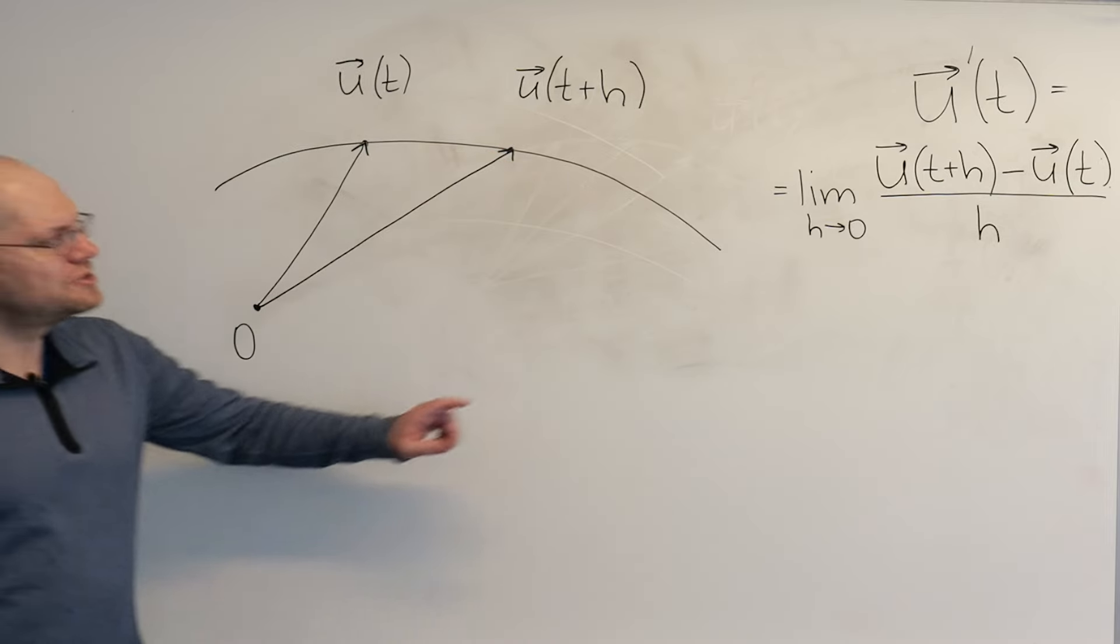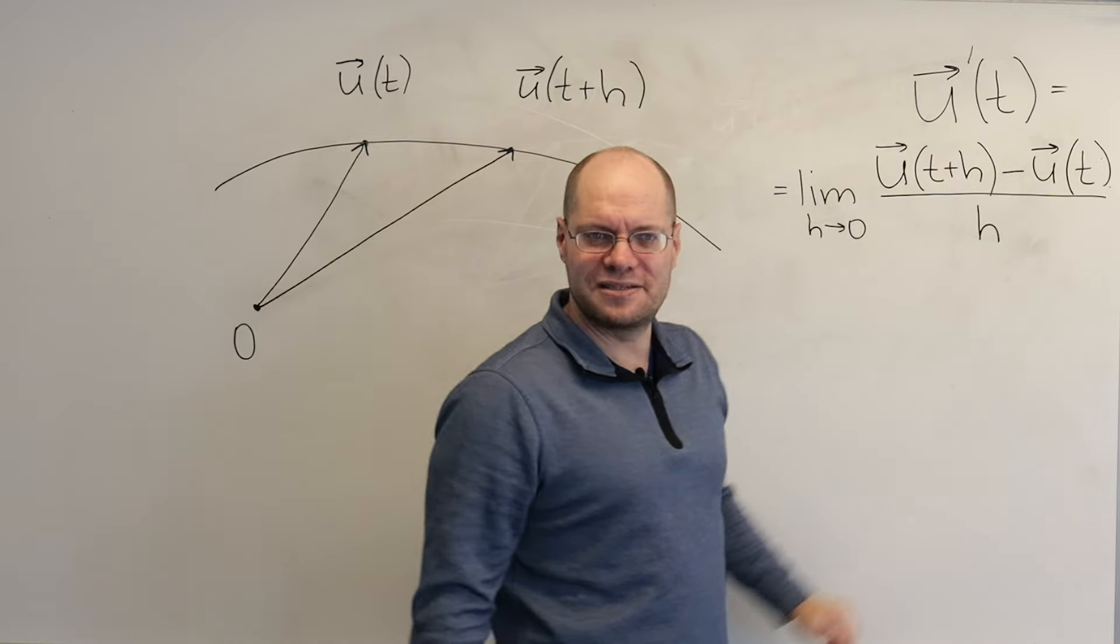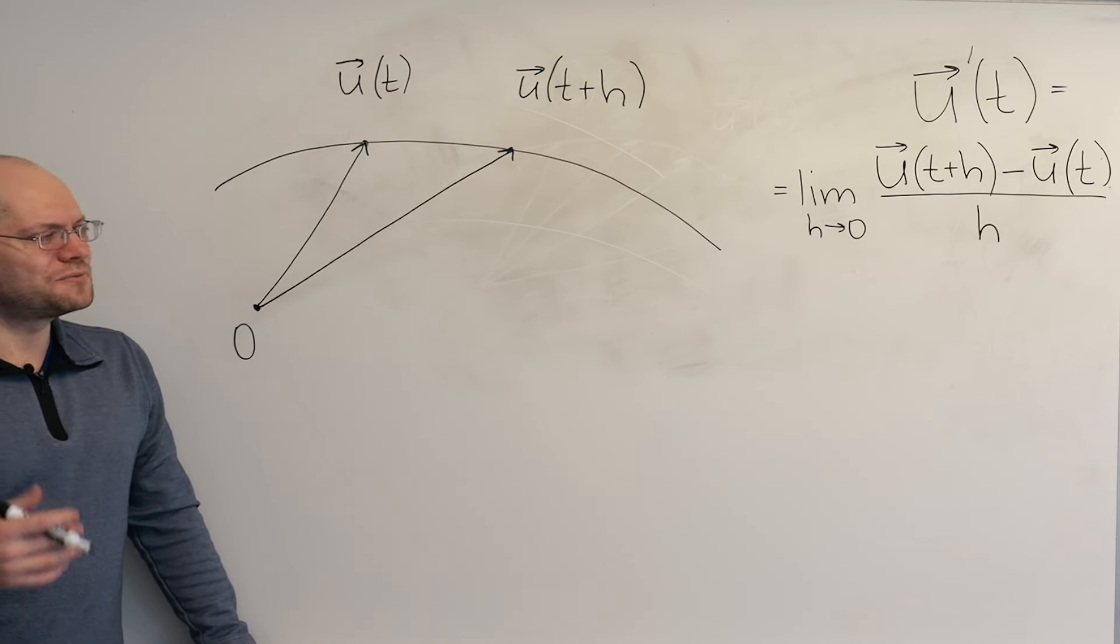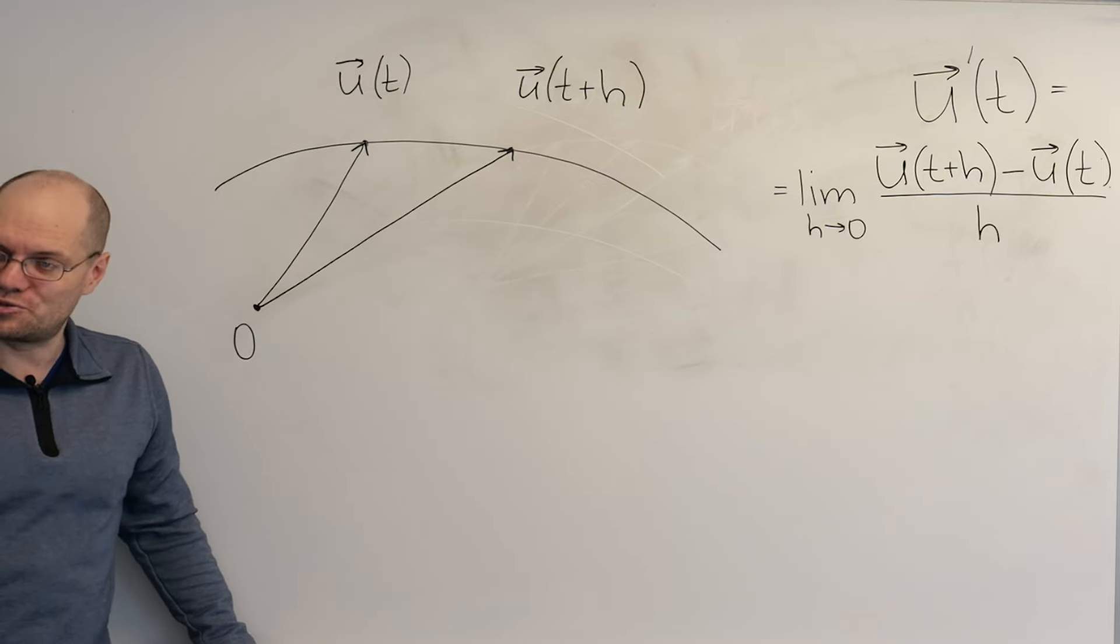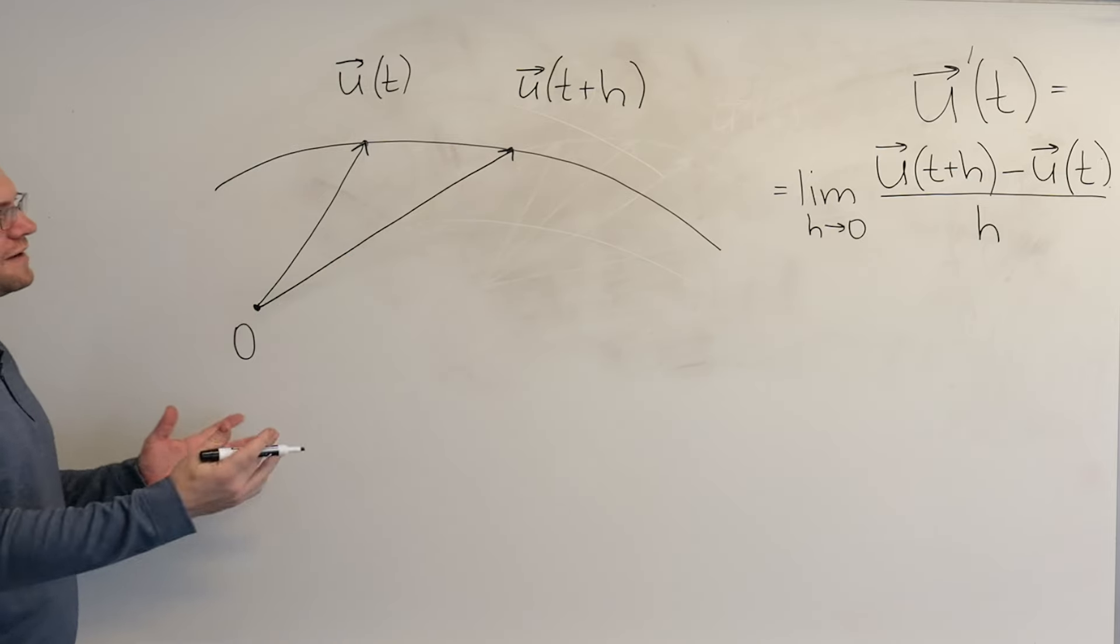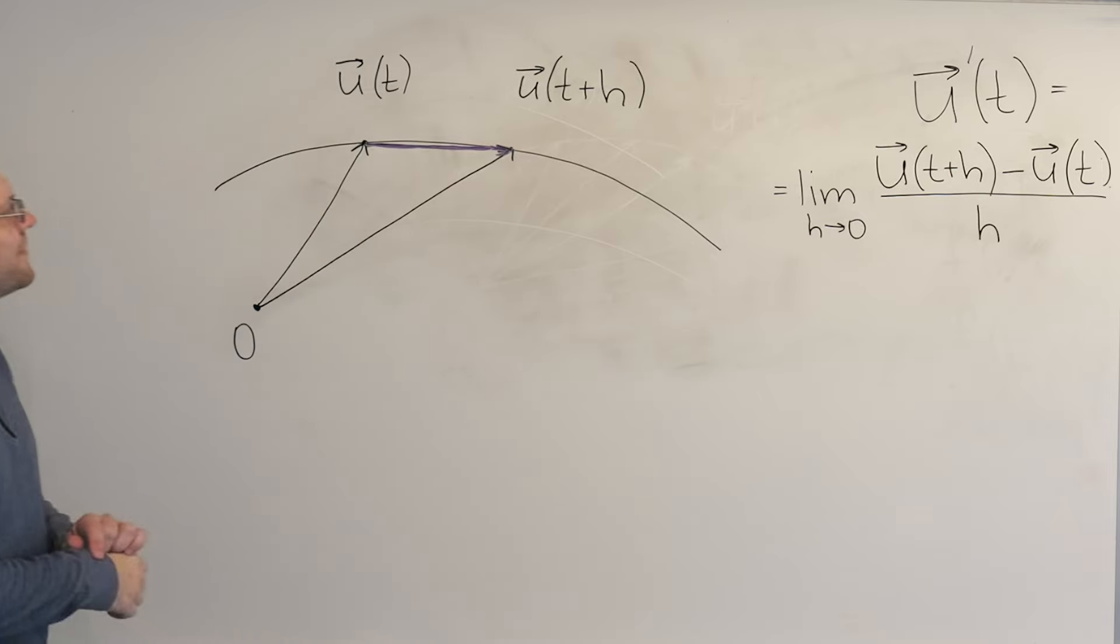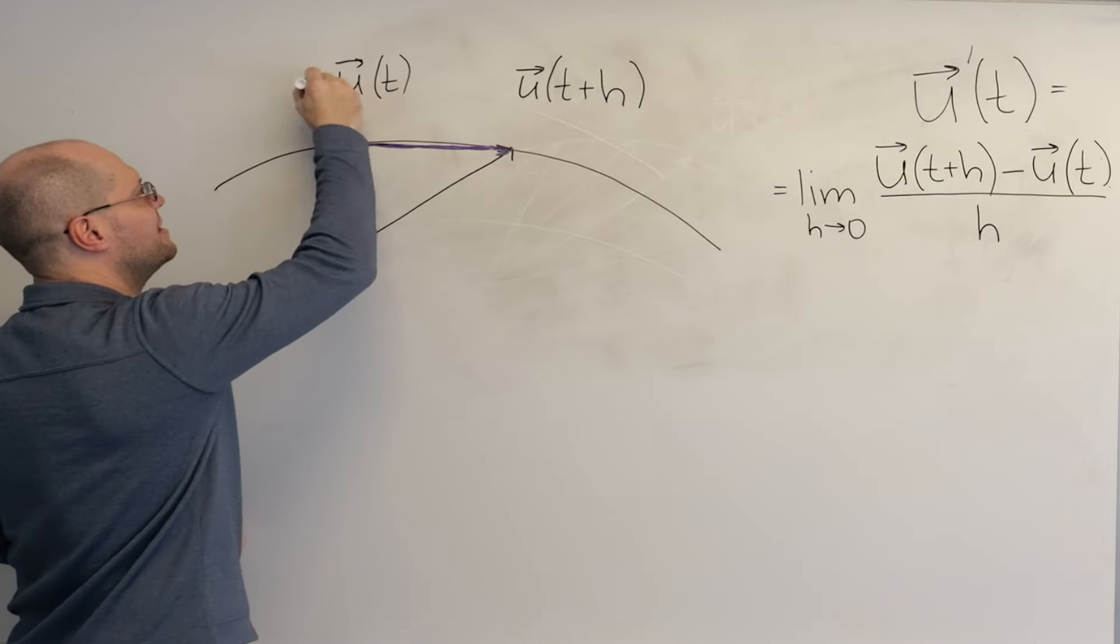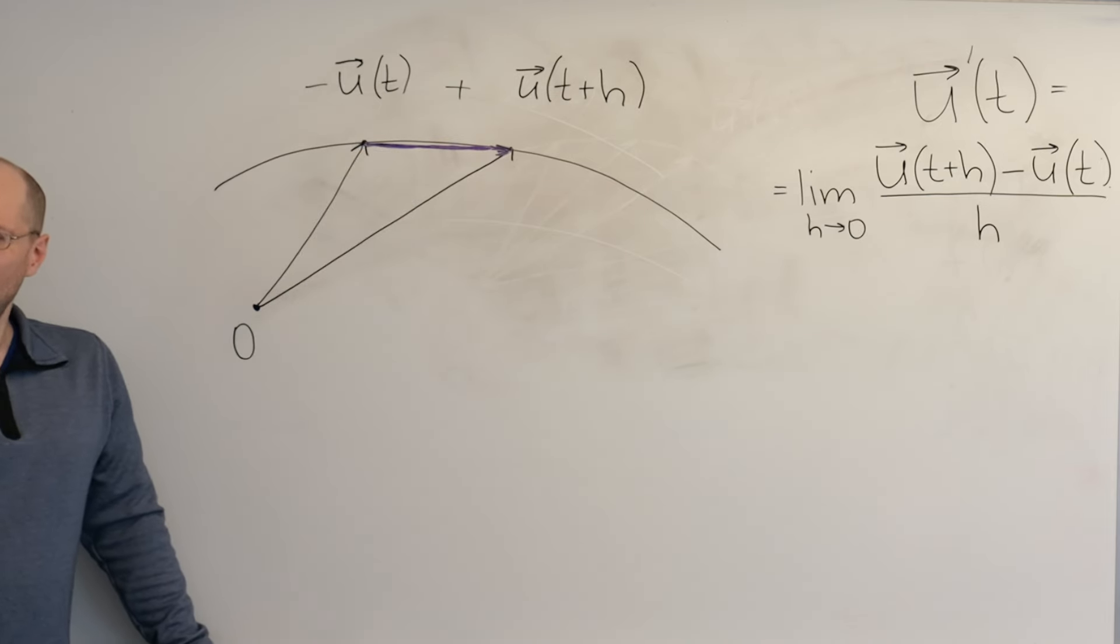So we now have this element and we have this element. Let's look for the next element, which is their difference. And this is another instance where why I like differences of vectors as opposed to sums shines, because to find this difference, we don't have to do any constructions. All we need to do is connect the tips. So this is this difference on top right here.